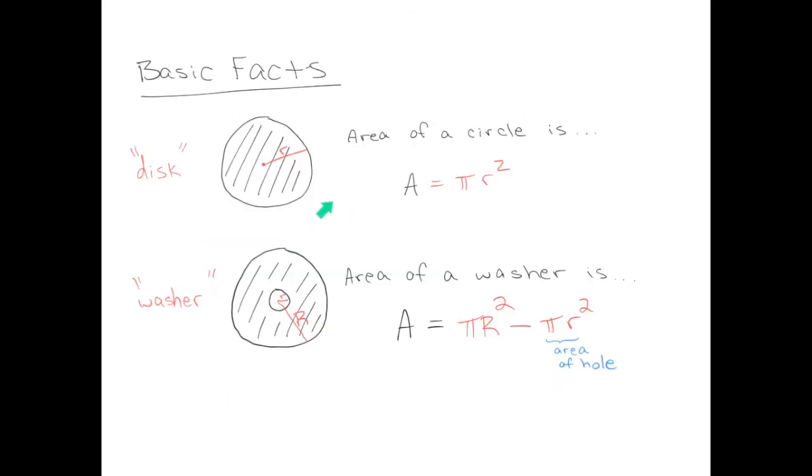On the previous slide, our cross sections were circles, so the function that we were integrating was pi times the radius of the circle squared. On the next slide, we'll do an example with a cross section. The cross sections are washers, so the quantity that we're going to be integrating in that case is pi big radius squared minus pi little radius squared. Remember, it's all about the cross sections. If the cross section is a circle, you integrate pi r squared. If the cross section is a washer, you integrate pi big R squared minus pi little r squared.